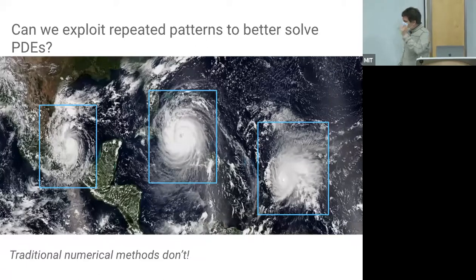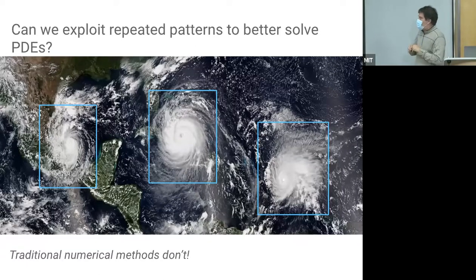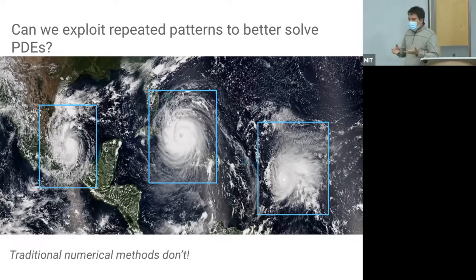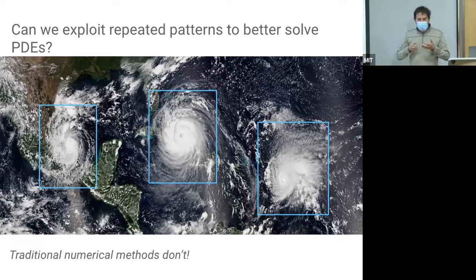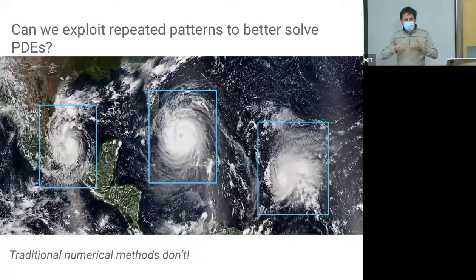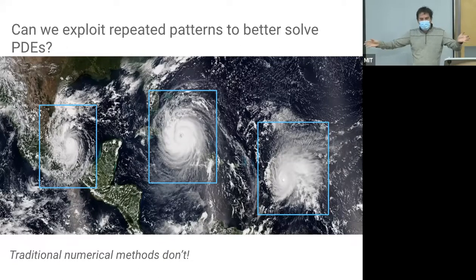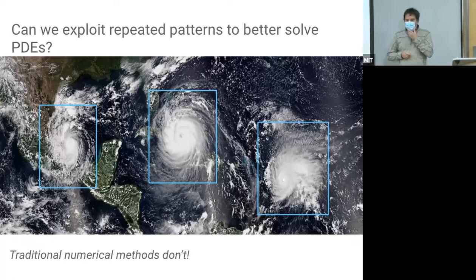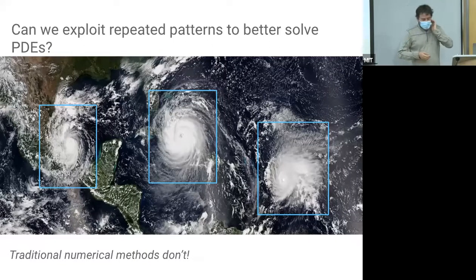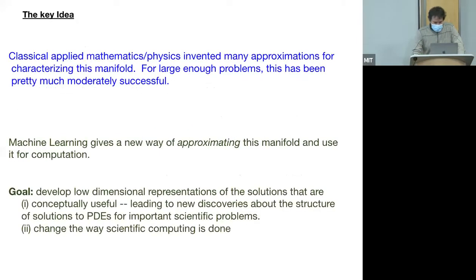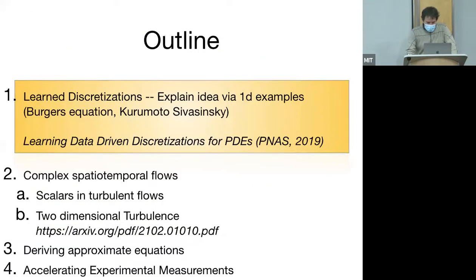The question is: can we use machine learning to better solve equations? The argument is that there are patterns in solutions and if we can learn to exploit them in a way that maintains the generalizability inherent in classical numerical methods, then we can make progress. Classical numerical methods are general—you teach one algorithm and it works for all PDEs. We may need to derive update rules that are equation-specific, but we still want generalizability within the equation.